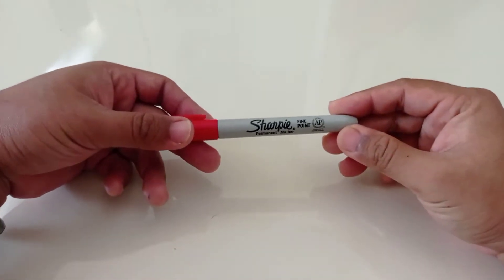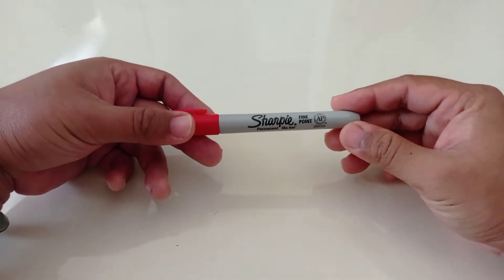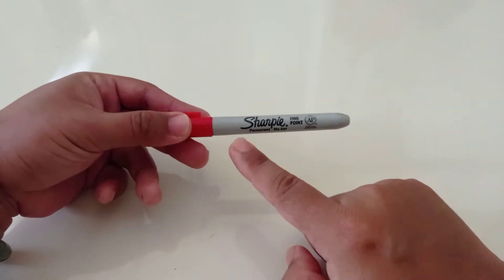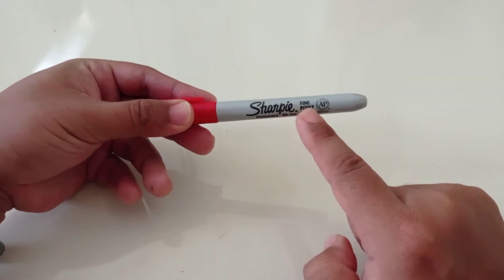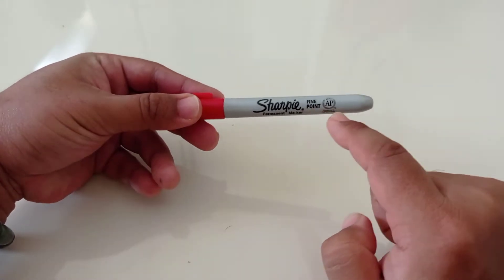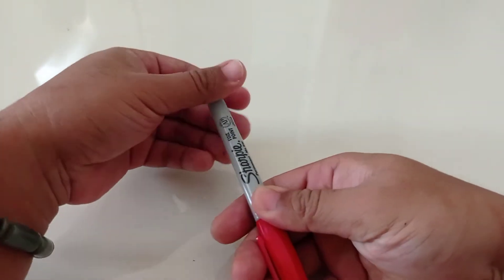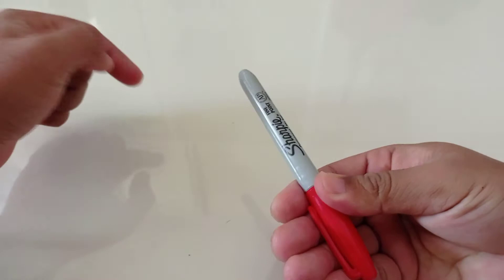Okay, so this is something about Sharpie pen. This is Sharpie and you can see the fine point and AP here on both sides.